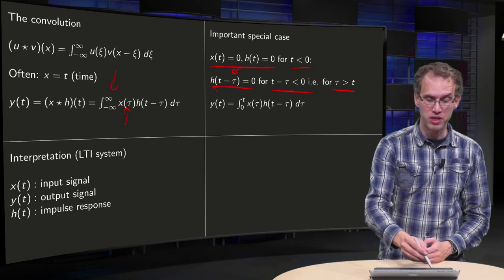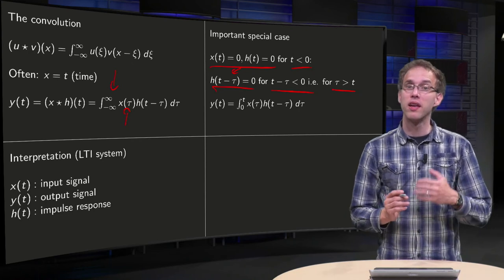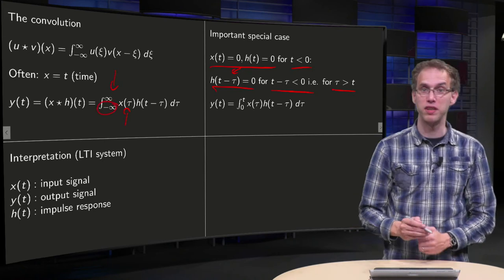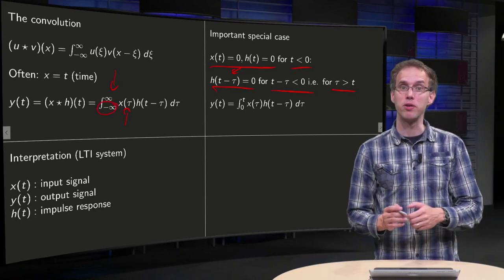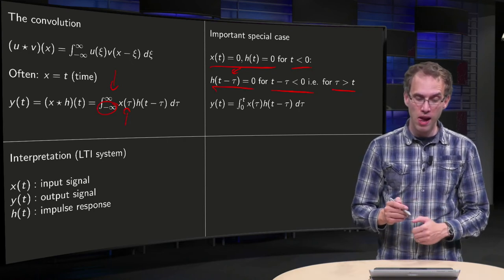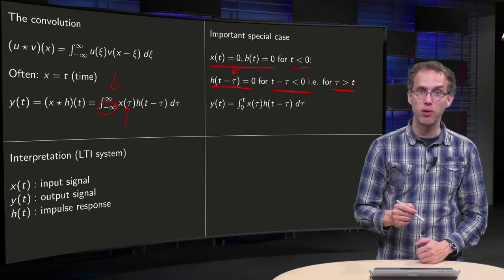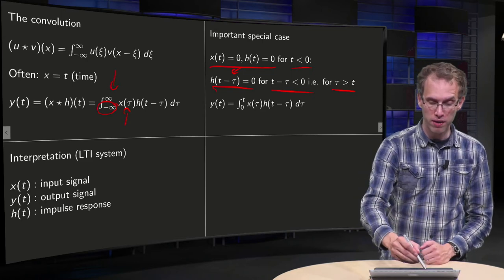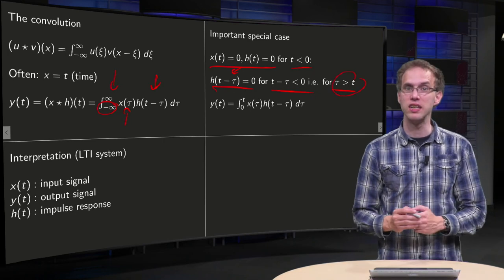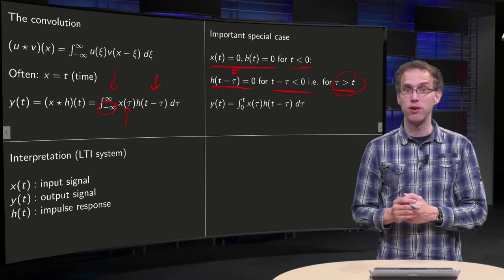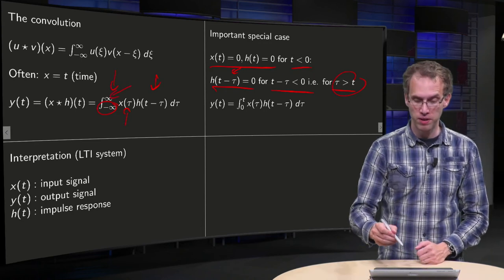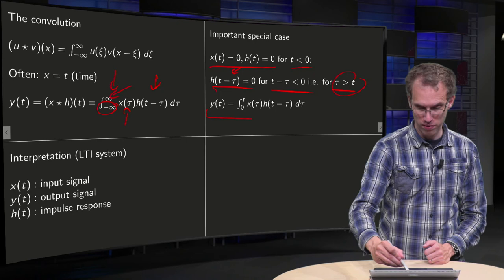So if tau is negative over here, the integral does not have a contribution. So you can replace this minus infinity by zero, because for negative tau your function is zero anyway. And the integral also is zero if this argument here is negative, so if tau is bigger than t, so for tau bigger than t you also don't have any contributions, so you can replace this upper boundary here by t.